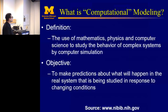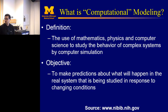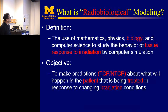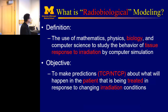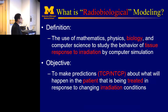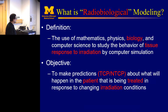So what is computational modeling? The NIBIB defines it as the use of mathematics, physics, and computer science to study the behavior of complex systems by computer simulation, with the objective of making predictions about what will happen in the real system in response to changing conditions. Radiobiological modeling is no exception — it uses physics, biology, and computer science to study tissue response to radiation. The objective is to make predictions quantified as TCP and NTCP about what will happen in a patient being treated in response to changing radiation conditions.